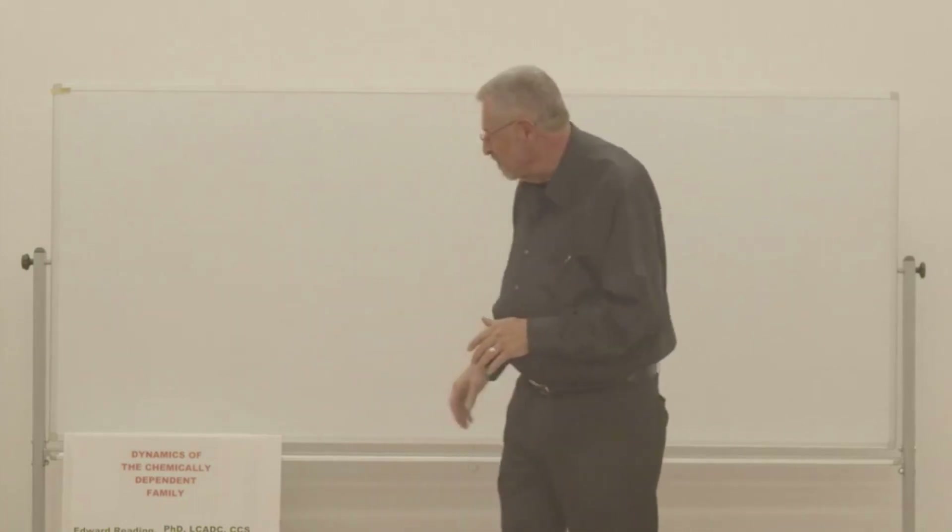We're going to talk about the dynamics of the chemically dependent family. We start off with the previous lecture's material, especially regarding what addiction is and how it develops. For this session, when talking about the chemically dependent person in the family system, I'm going to begin with the stereotypical family: dad being the alcoholic or addict, mom being the codependent, and then a bunch of kids. When you see how many kids I describe, you'll know we're talking about Catholic families.